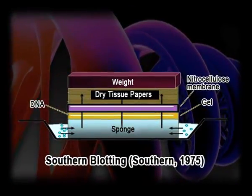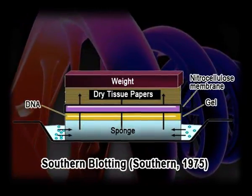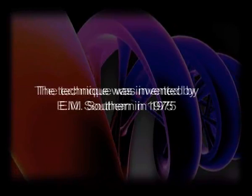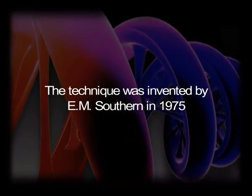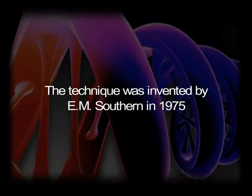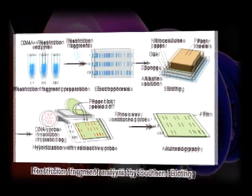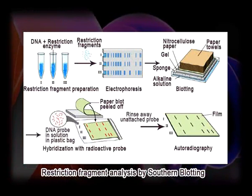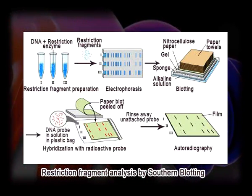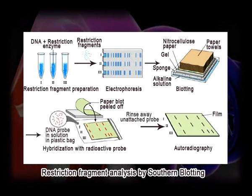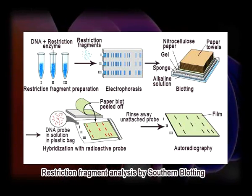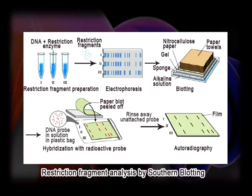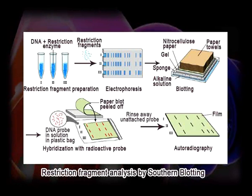Southern blotting is a technique of transferring DNA molecules from agarose gel to a solid support such as nitrocellulose paper or nylon membrane, followed by hybridization with a specific probe. The technique was invented by E.M. Southern in 1975, hence the name southern blotting. During southern blotting, the DNA molecules in the gel move upward by the capillary action of the buffer and come in contact with the nitrocellulose membrane where they get attached. The DNA fragments transferred on the membrane occupy the same positions as in the master gel.